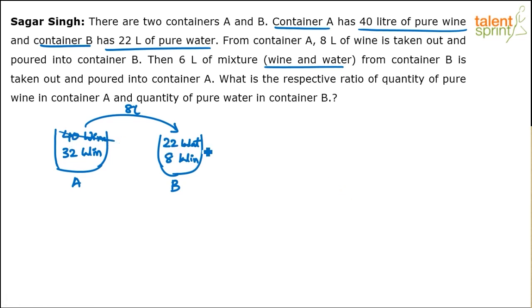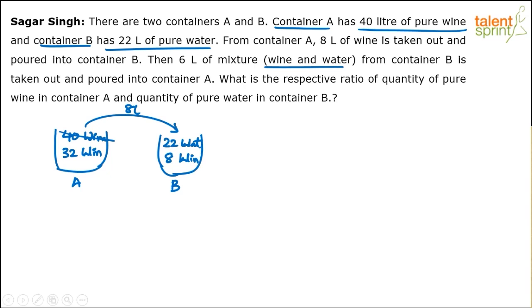Initially it was 40 liters wine and 22 liters water, but we removed 8 liters of wine from A and poured it into B. So now we have 32 liters of wine left in container A. Container B has now become a mixture of water and wine — earlier it was only pure water, but now it has 22 liters of water and 8 liters of wine.